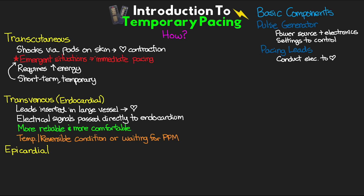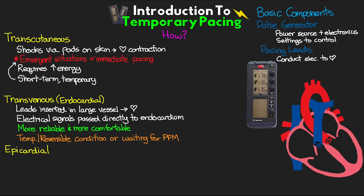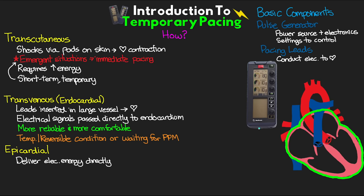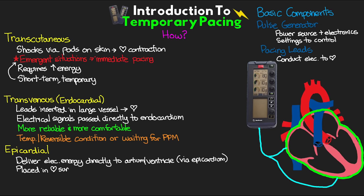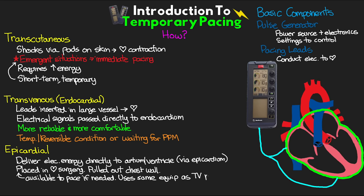The last method is epicardial pacing, which is pretty similar to transvenous pacing. The epicardium is the outer layer of the heart and forms the visceral layer of the pericardium, the pericardial sac that surrounds the heart muscle. These leads deliver electrical energy directly to either the atrium or the ventricle by being attached to the epicardium. They are placed during cardiac surgery and then pulled out through the chest wall and sutured in place, using the same equipment as transvenous pacing. One nice feature is that if leads are placed in both the atrium and the ventricle, this can allow for more complex pacing.